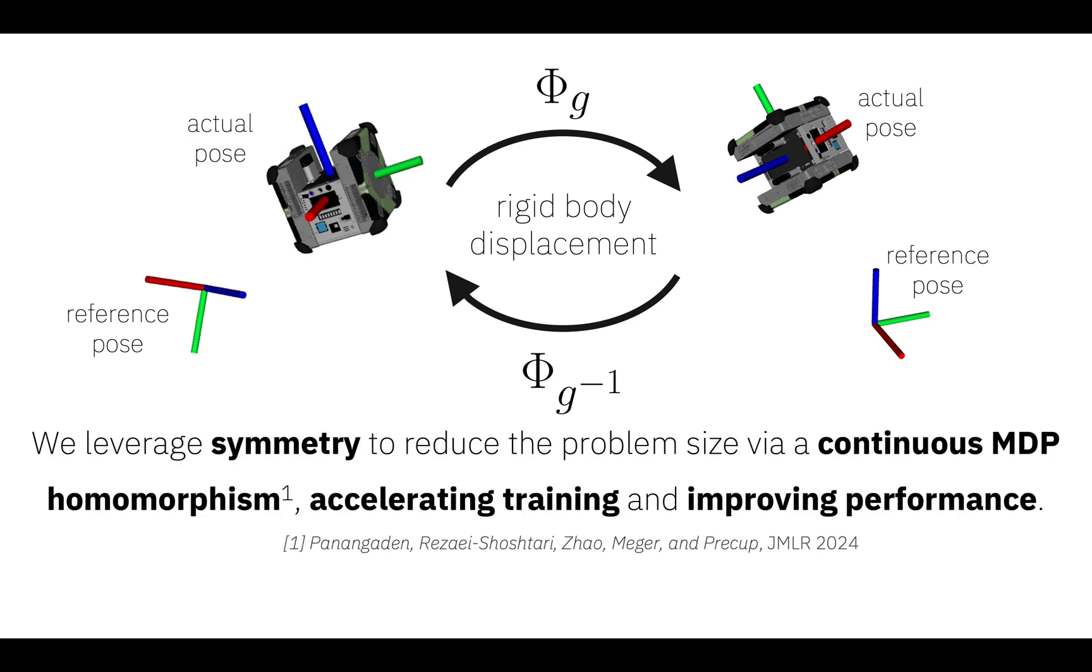In this work, we leverage such symmetries to reduce the dimensionality of the tracking control problem via an MDP homomorphism, thereby accelerating training and improving performance.